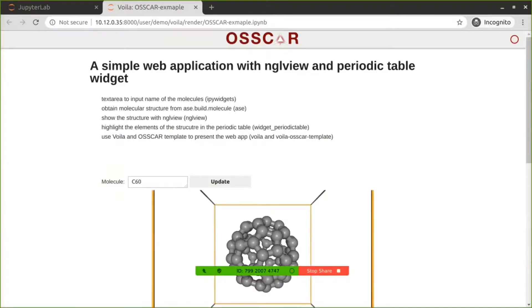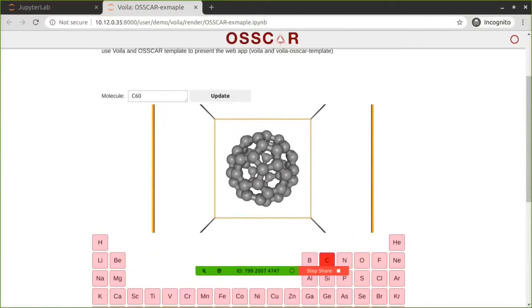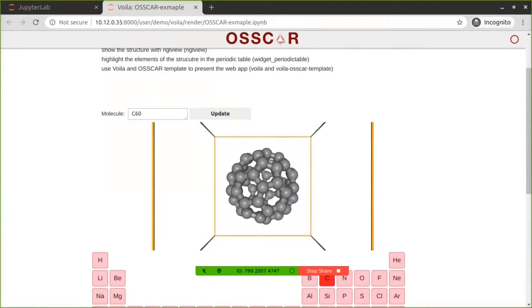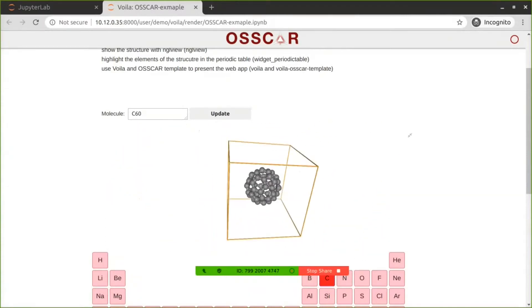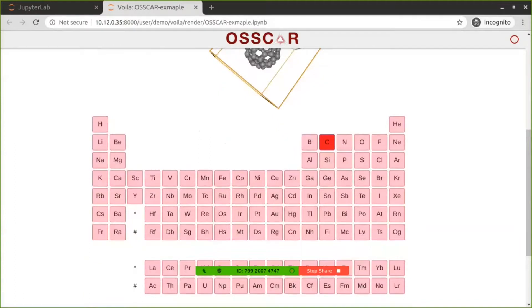So here is the result from Voila. We can see Voila hid all these code cells. It only shows the markdown with the title and some description. It shows the output like the widgets. Here we have the text area. The update button. The NGLView with the fullerene as the default structure. We have the periodic table where carbon is selected and highlighted with red color.